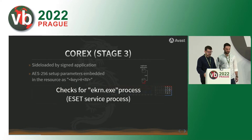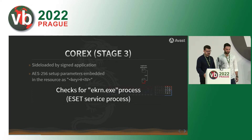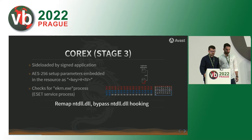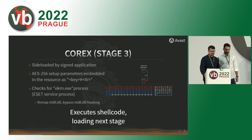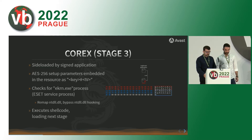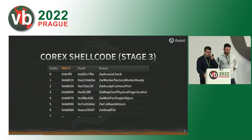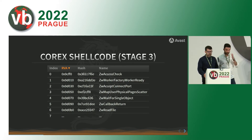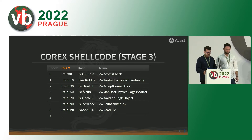When executed, this stage checks for a specific process present on the system, which is a service process. If they find this process, they remap NTDLL to bypass hooking. After that, they execute the shellcode and load the next stage. One interesting technique used in the shellcode was that they enumerated exports of NTDLL and built an array with hashes of the names of ZW functions, which are basically the syscalls.